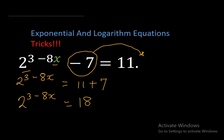Now the next step is to take the logarithm of both sides. To take the log of both sides simply means add log to the left hand side, we'll have log 2 raised to the power of 3 minus 8x, and add log to the right hand side which will give us log 18.